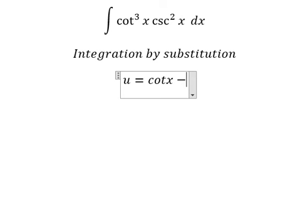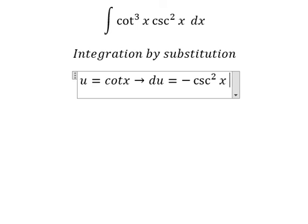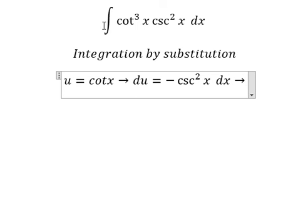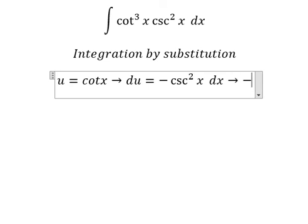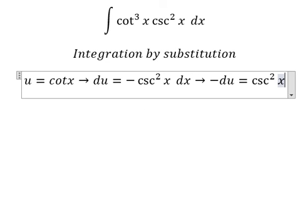If I do the first derivative for both sides, we have du equals negative cosecant squared x dx. Because we don't have the negative sign in here, we put negative on the left. And we have negative du equals cosecant squared x dx.